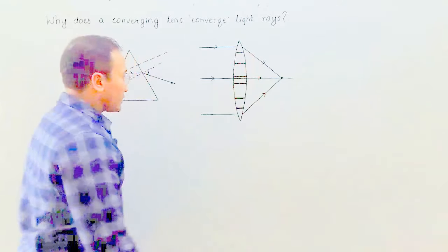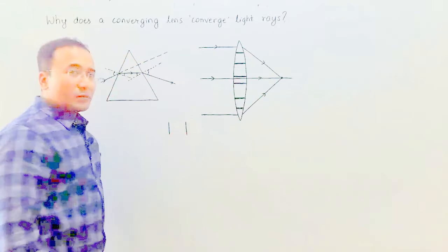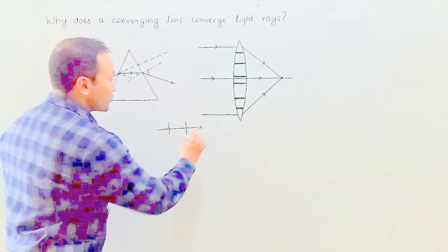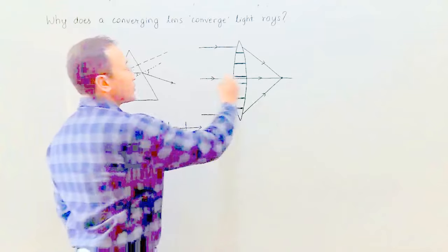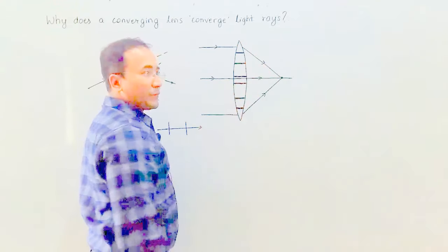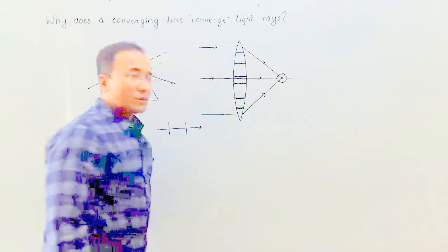In the middle, the surfaces are almost parallel to each other. It's like a rectangular glass slab, so the light rays have to go straight. Here straight, all of this light is going down, all of this going up. So there is no other choice than to converge somewhere.